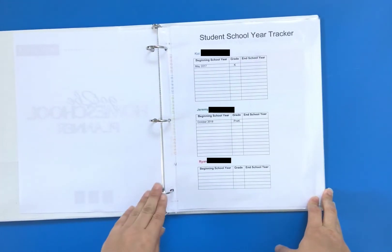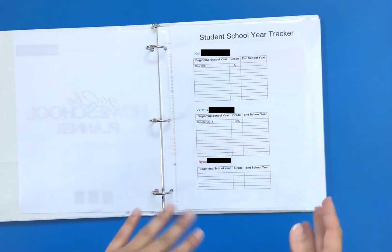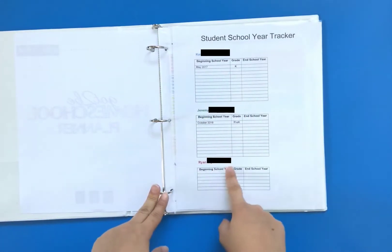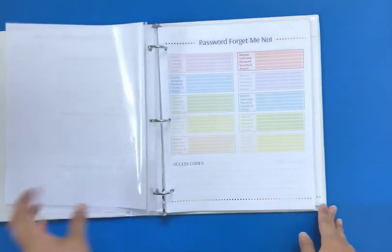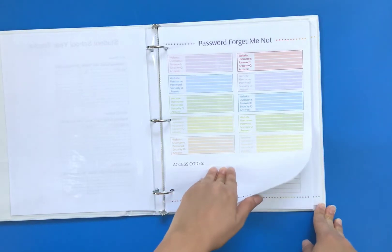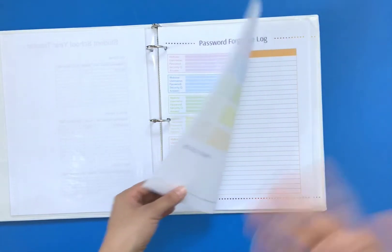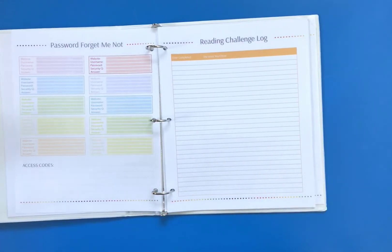We homeschool year-round and I don't always keep track of when we start or when we end the year, so I just write things down so I can remember when I actually started the year. I added this page because I always forget the websites and the passwords of all the educational programs that we use.